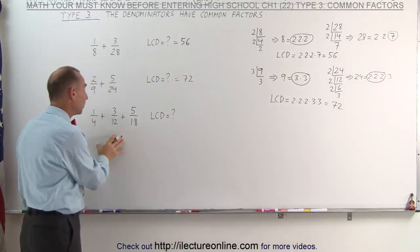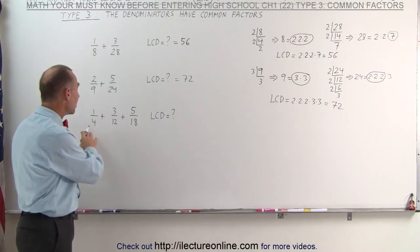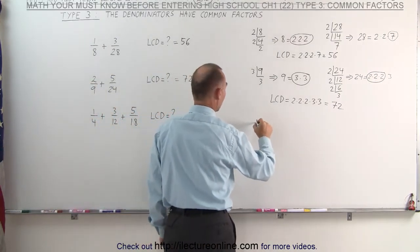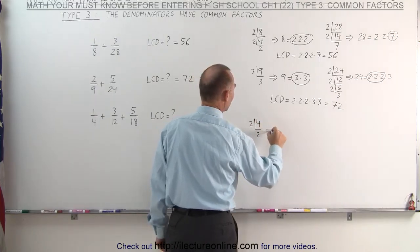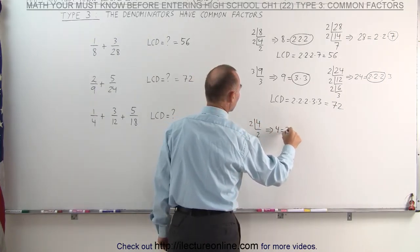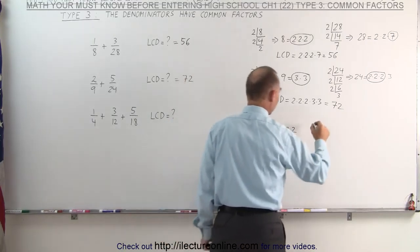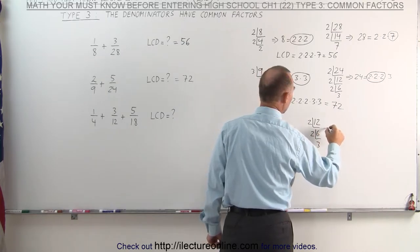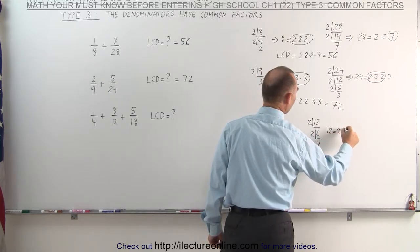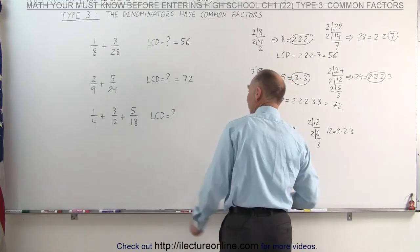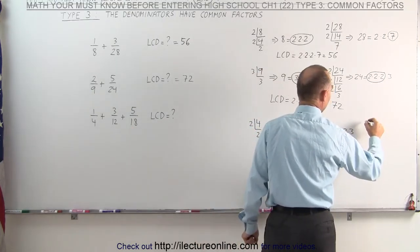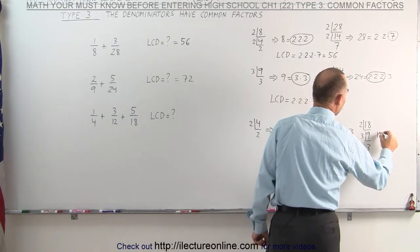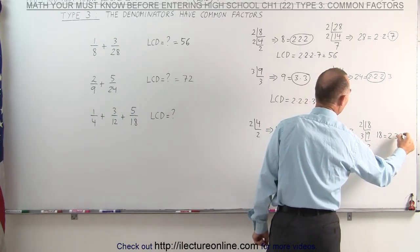Here we have 3 fractions, but again we do the exact same thing. We write each of the denominators as a product of its factors. We take the number 4, divide that by 2, we get 2, which means that 4 is equal to 2 times 2. The denominator 12 can be divided by 2 to get 6, divided by 2 to get 3, which means that 12 is equal to 2 times 2 times 3. And finally, the last denominator 18, divided by 2 gives us 9, divided by 3 gives us 3, so 18 can be written as 2 times 3 times 3.